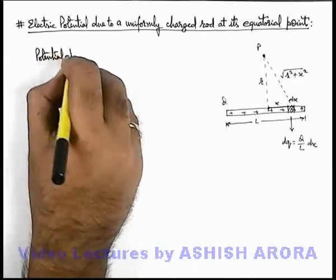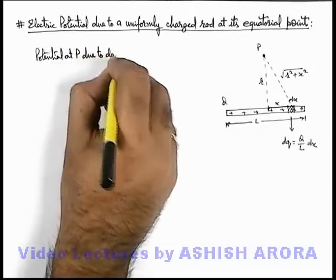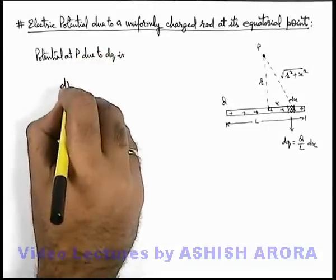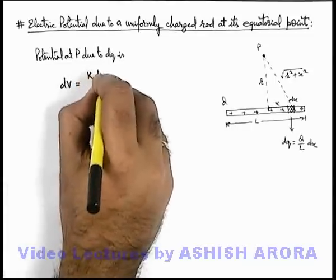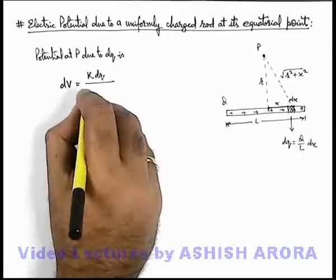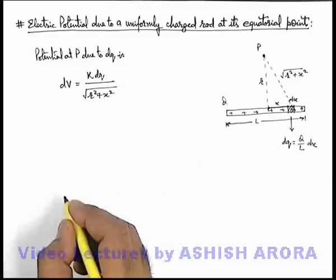Here we can write that potential at P due to dq is dV, and the value of dV here will be k dq by the distance which is √(r² + x²).